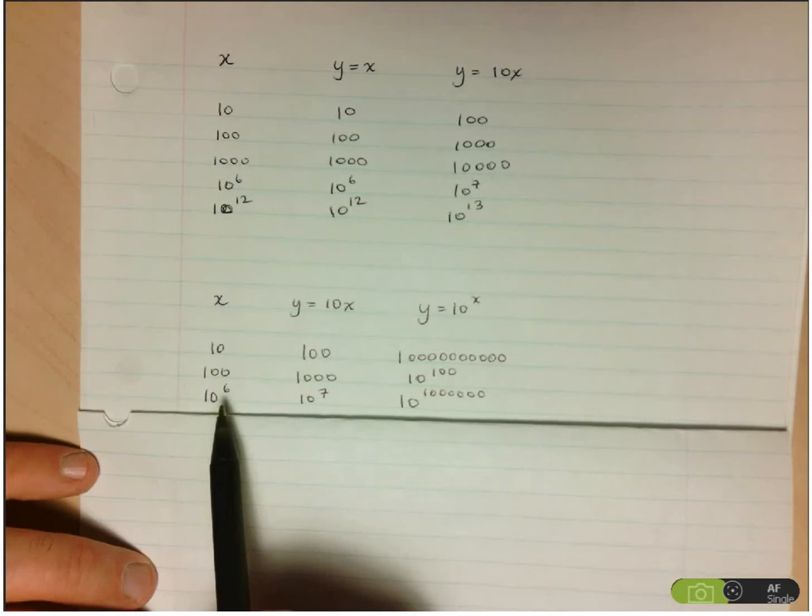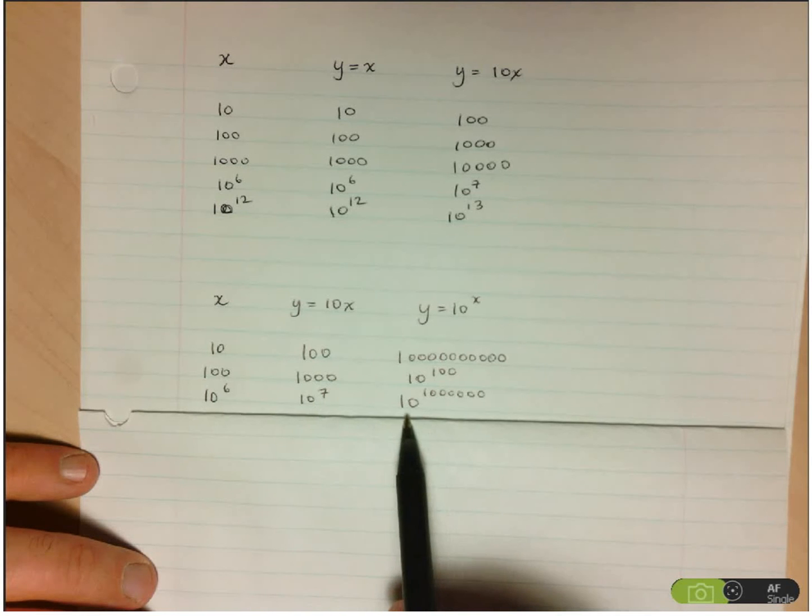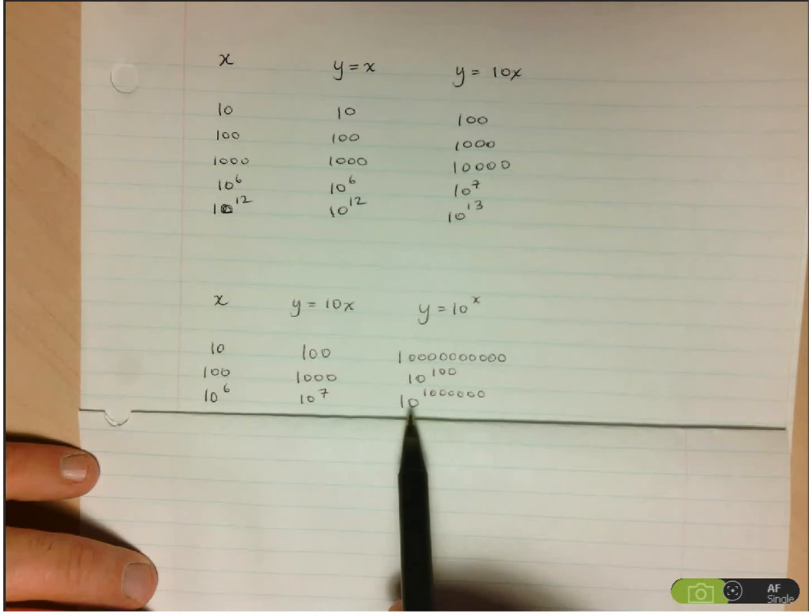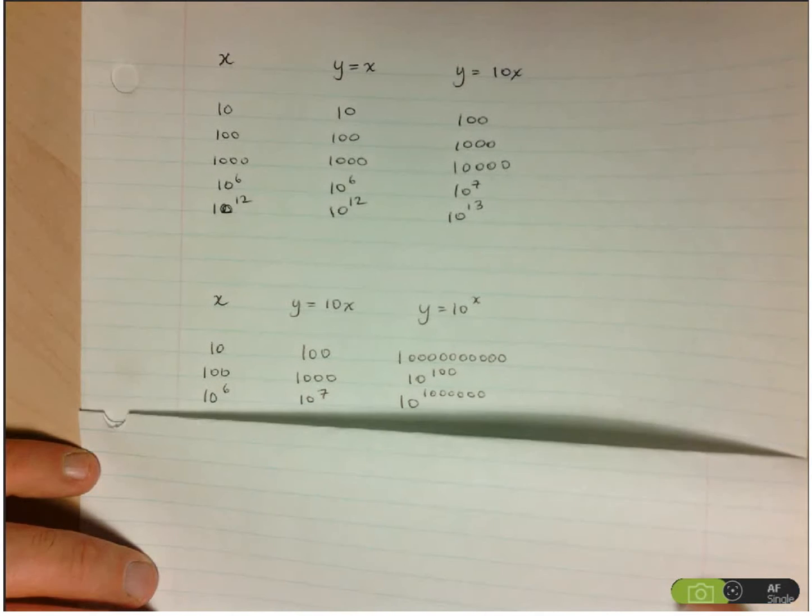So if you take 10 to the 6, y equals 10x is equal to 10 to the 7, a huge number but insignificant compared to 10 to the 1 million. So again, when we're talking about different orders of growth, we're talking about one function becoming insignificant with respect to the other.